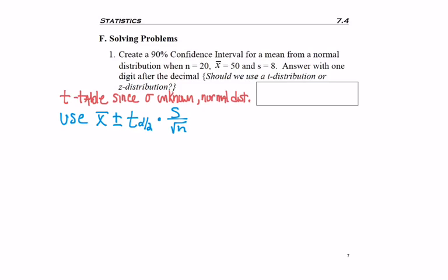To find our critical value, this is the only thing we're not given directly. A 90% confidence interval means 10% for alpha, or 0.10, and we don't have to cut it in half - we just go to 2-tail on the top. Row 19 because we want n minus 1, and we find that t_(α/2) equals 1.729.